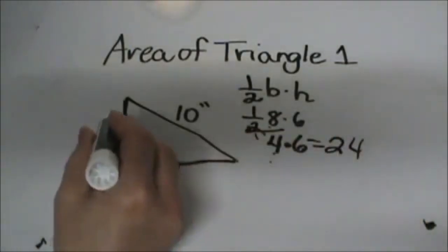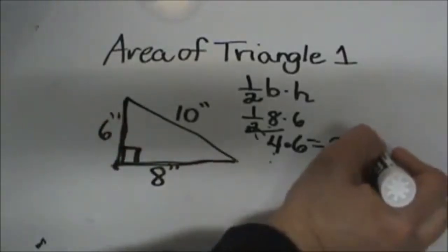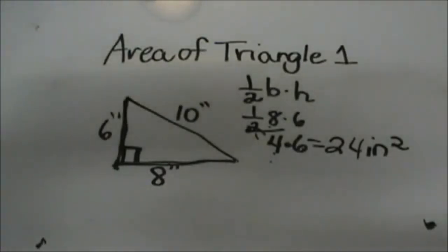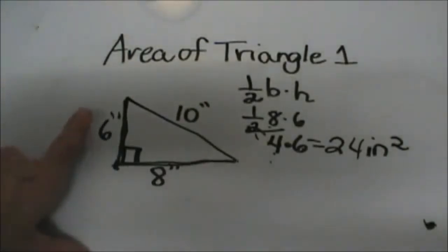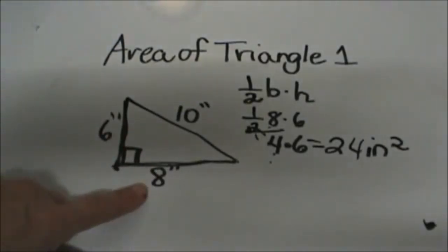And remember these are in inches so area is two dimensional so it's inches squared. So on a right triangle the key is to multiply the two legs together and then take half of that product.